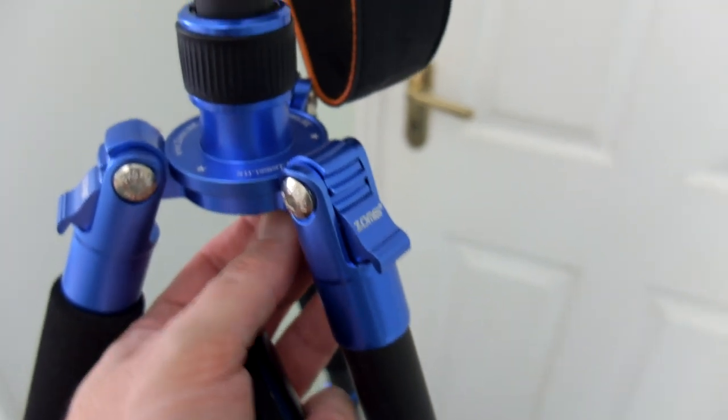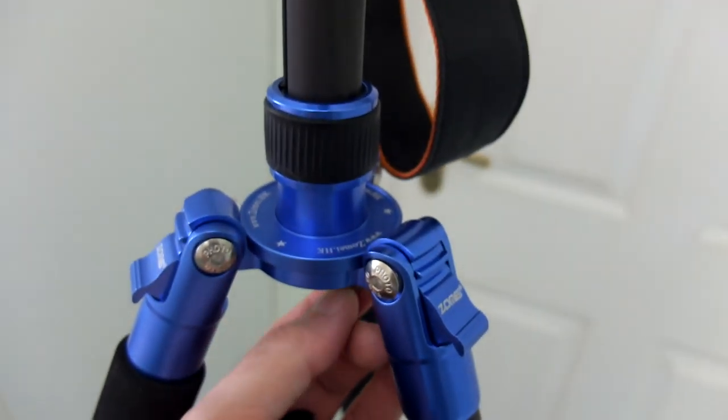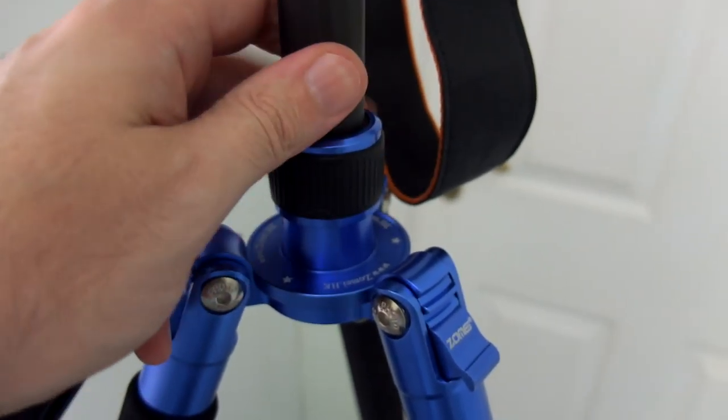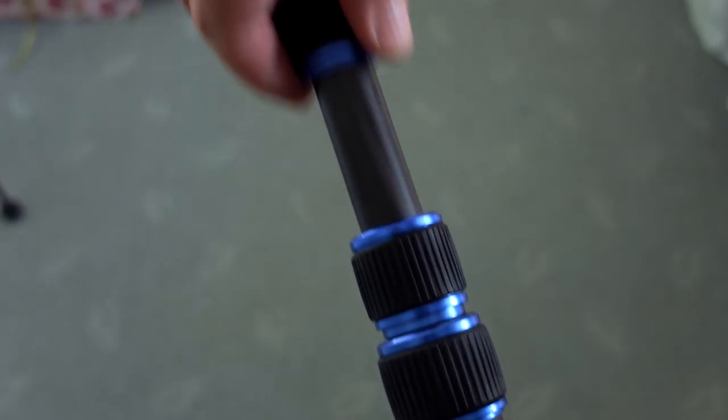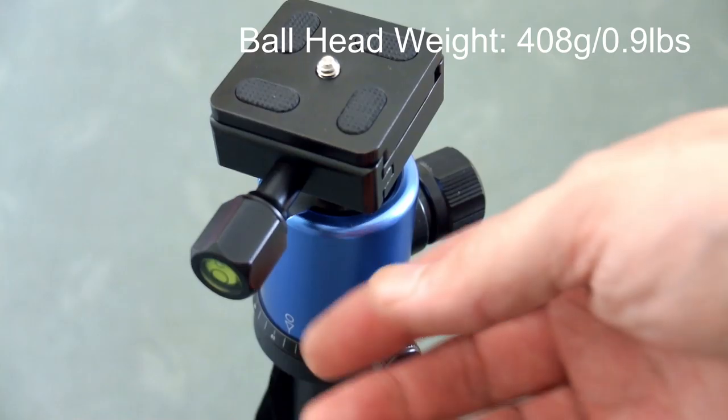Twist lock on the central column here. And you also have a hook where you can attach an additional weight or bag. Again, for the four-section leg releases, it's a twist lock. These are aluminum with rubber on the outside so they get fairly good grip. And you can see the carbon fiber.